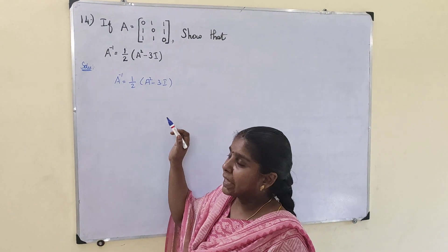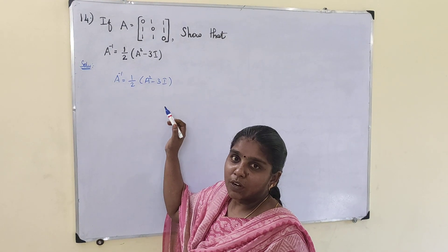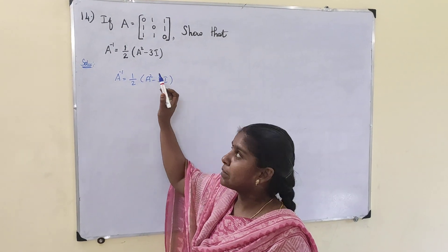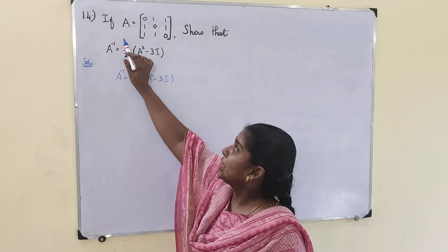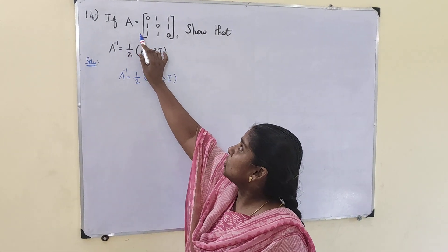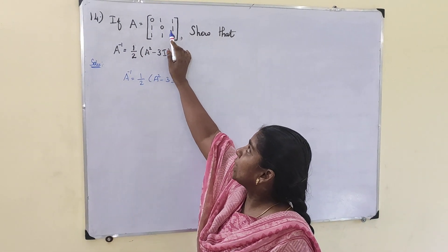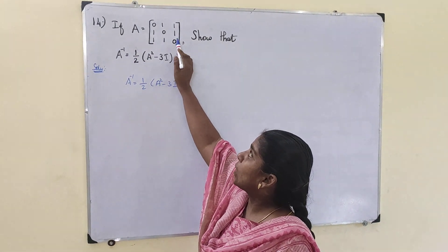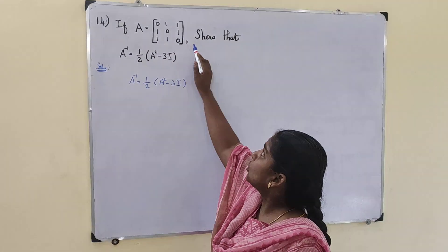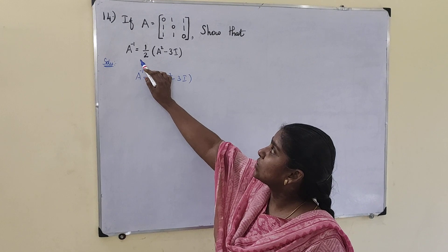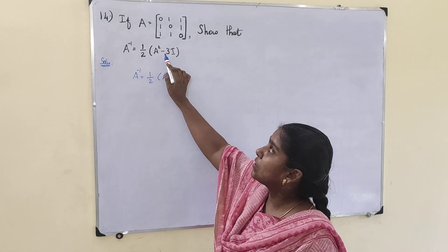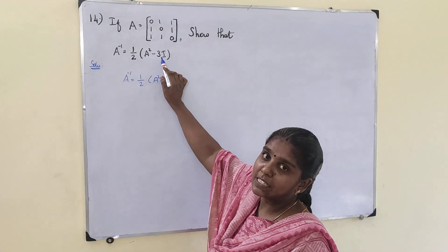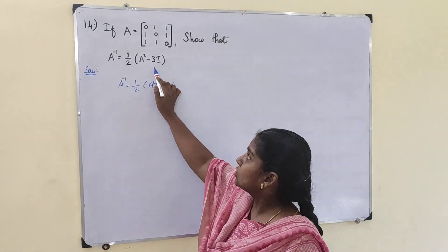Hi students. Exercise 1.1, problem number 14. If A is equal to the matrix [0,1,1; 1,0,1; 1,1,0], show that A inverse is equal to half into A square minus 3I.